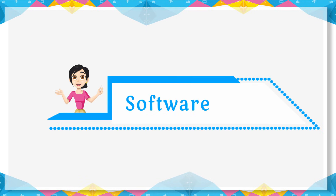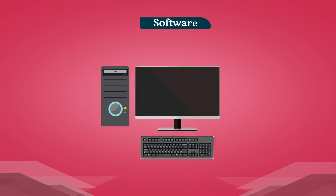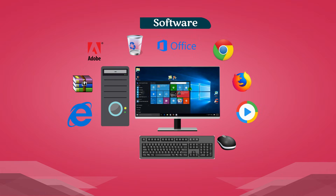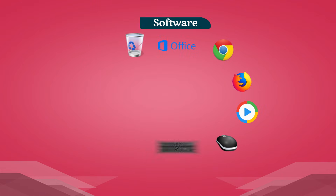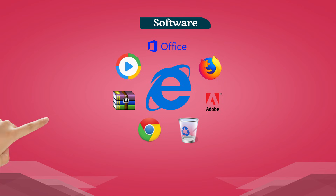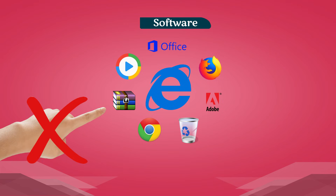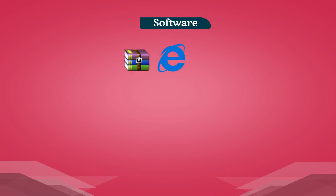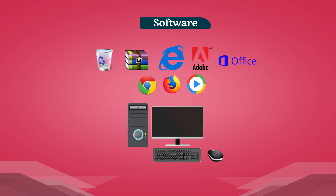Software. A computer is a collection of programs called software. It tells the computer what to do. We can't touch and feel software. Without software, computer hardware is useless.